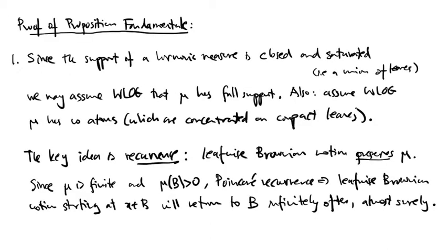Let's begin the proof of the proposition fundamental. We start by making two simplifying assumptions. First, the support of a harmonic measure is closed and saturated, meaning that it is a union of leaves. So without loss of generality, we may assume that mu has full support.